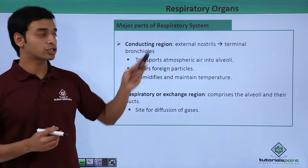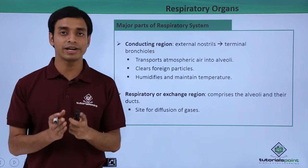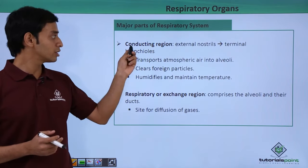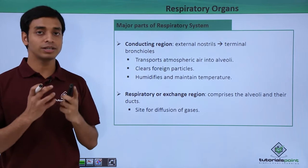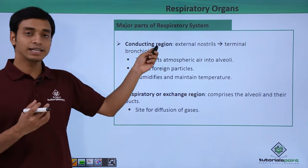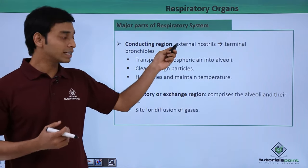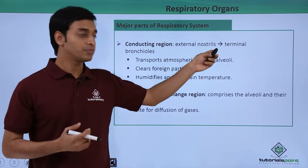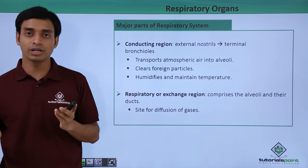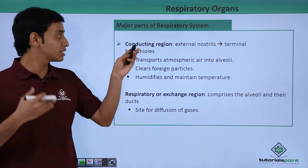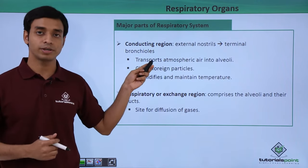The respiratory system can be divided into two major parts. The first is the conducting region, which conducts air. It comprises the external nostrils through to the terminal bronchioles. This entire region from the external nostrils to the terminal bronchioles is termed the conducting region of the respiratory tract.